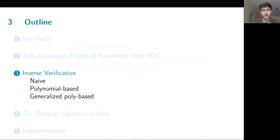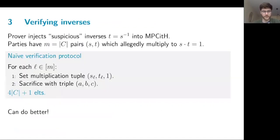However, this first way of doing inverse verification is quite naive. So now I'm going to describe how we can improve on this. To describe this naive approach in the context of having inversions, the prover here would be injecting these suspicious inverses into the MPC-in-the-head executions. That means that at the end, the parties end up with m pairs, which allegedly should each multiply to one. So the naive protocol is then to cast each of these pairs as a multiplication triple with expected output one, and verify each of these multiplications with a triple that is random. And this leads to this communication cost of four times the size of the circuit.